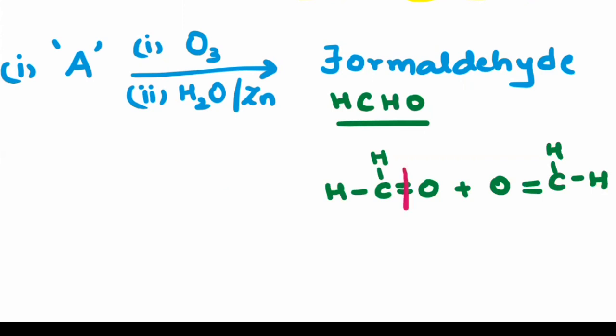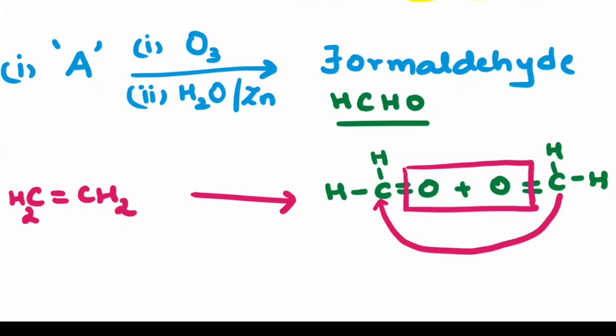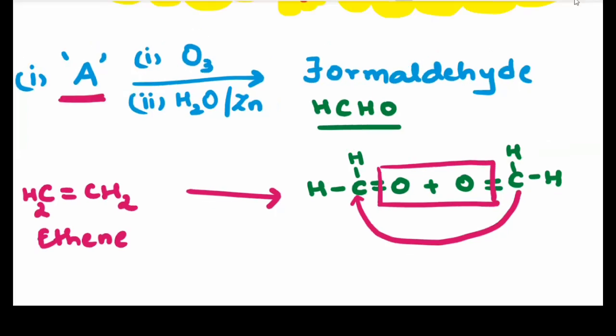Simply remove both the oxygen and then the carbon-carbon will be attached to each other through double bond. So the reactant will be CH2 double bond CH2. So in short, ozonolysis of ethene will be giving me the final product as formaldehyde. So the structure A is ethene.